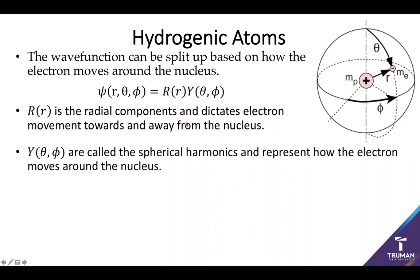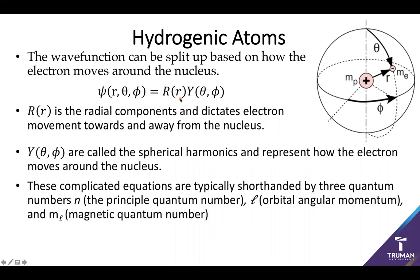These actual mathematical functions get really messy, so we tend to shorthand them using three quantum numbers. They're called quantum numbers because they have to have discrete values. One is the principal quantum number n. Just like before, it's going to mostly refer to the energy.